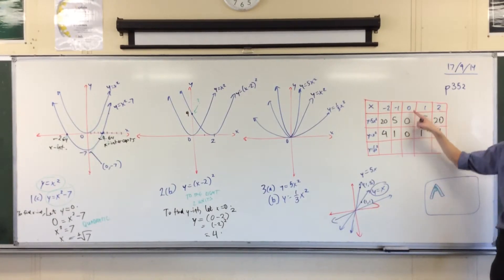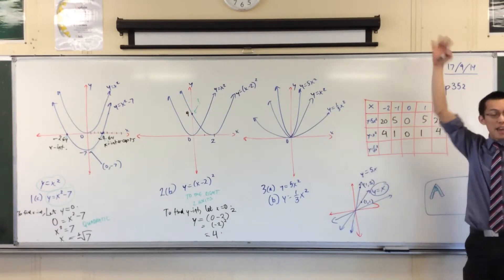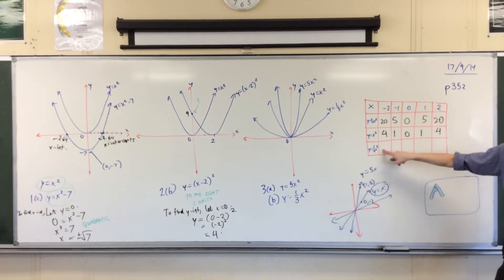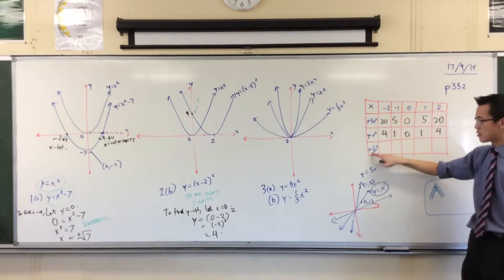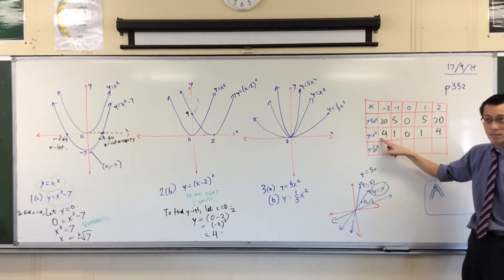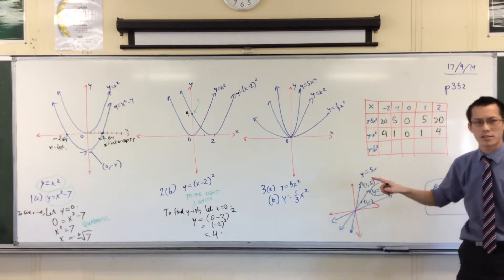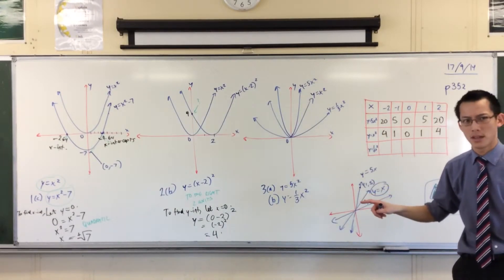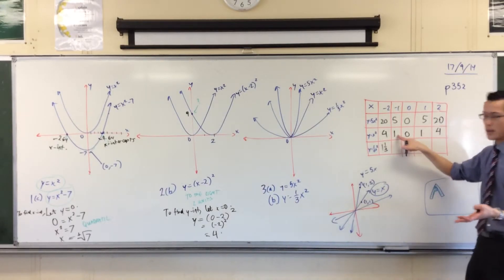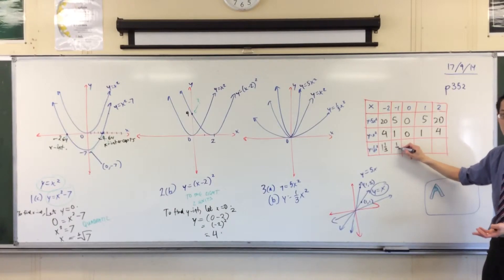So notice, they all pass through zero. They both pass through zero, but these guys are higher. They're much higher. They're five times higher. Alright, now down here. From x squared, I'm going to divide everything by three. So, four divided by three, that's four thirds. What's four thirds as a mixed numeral? It'll be one and a third. One divided by three? A third. Zero divided by three? Zero. And then it's symmetrical.